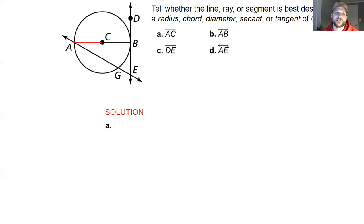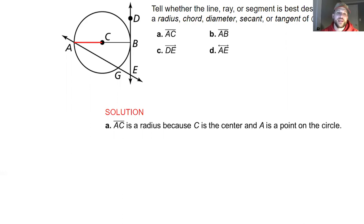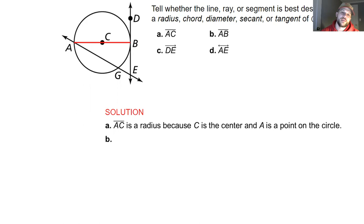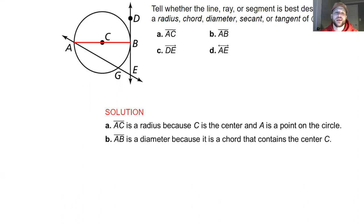First, looking at line AC: one endpoint is at the center and one is at the edge of the circle, so by definition AC is a radius because C is the center. Moving on to part B, line AB has both endpoints on the edge of the circle and travels through center point C, which makes AB a diameter because it passes through the center.